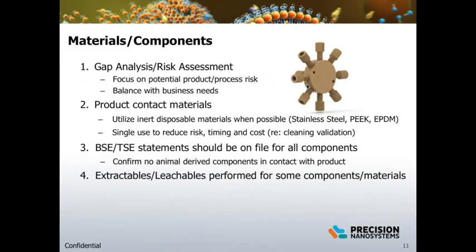For extractables and leachables, any novel components in the system should be evaluated for initial extractables and leachables de-risking work to ensure that there will not be problems later. BSE-TSE statements should be on file for all components entering the processing environment. This looks for the availability of documentation showing that there were no animal-derived components or process contact materials in the process flow, and should be assessed during the initial de-risking analysis and component sourcing as it will be a critical documentation element prior to entering the GMP arena.